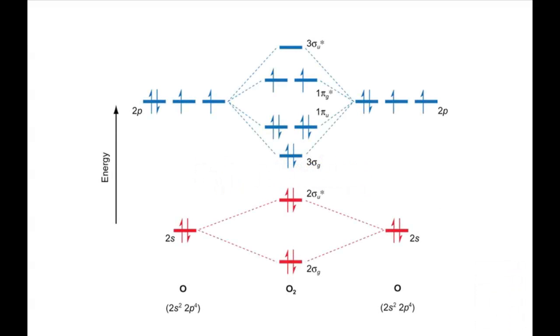In oxygen, for example, the S orbitals interact to form a sigma-g bonding orbital and a sigma-u antibonding orbital, whereas the P orbitals interact to form sigma-g and pi-u bonding orbitals and sigma-u and pi-g antibonding orbitals.